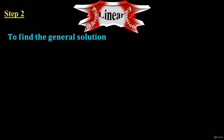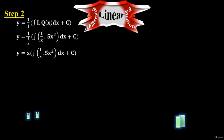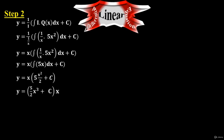Step two: to find the general solution. Substitute the integrating factor, which is 1 over x, into the general solution formula. Q of x is 5x squared. Now, 1 over 1 over x equals x to the minus 1 in the denominator, which moves to the numerator as x. Simplifying further, I finally get y equals to 5 over 2 times x cubed plus cx.